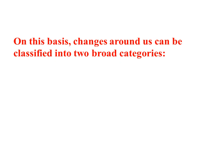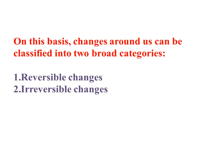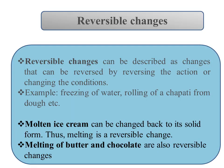On the basis of changes, changes around us can be classified into two broad categories: first is reversible changes, second is irreversible changes. Today we are going to discuss only about reversible changes. Reversible changes can be described as changes that can be reversed by reversing the action or changing the condition — that is, they can be undone or reversed. These changes are observed in the physical state, size, or shape of substances, and reversible changes do not create a new material.